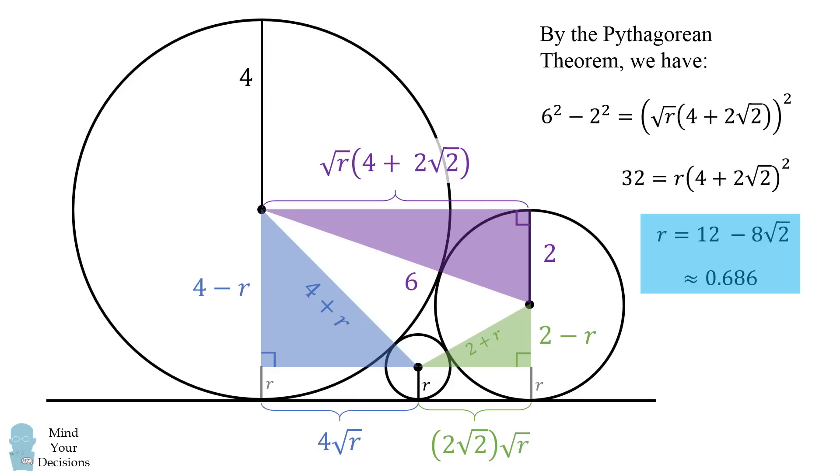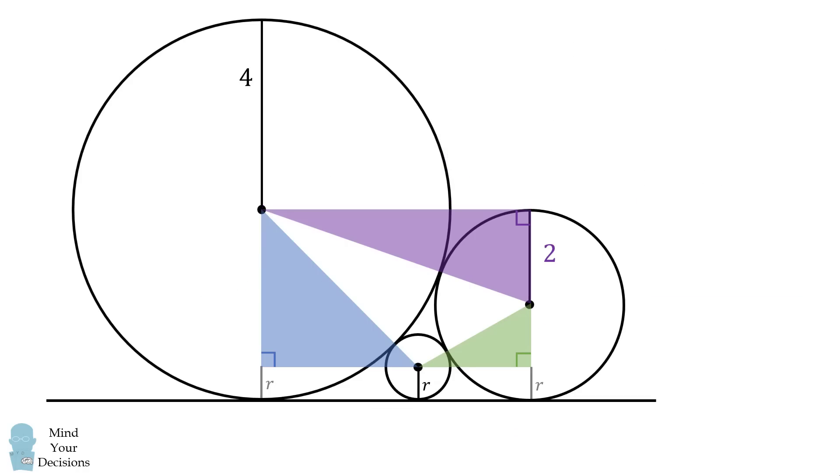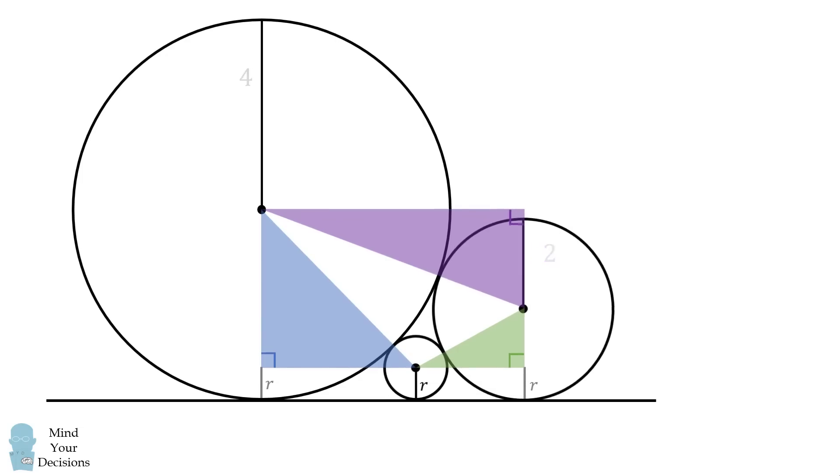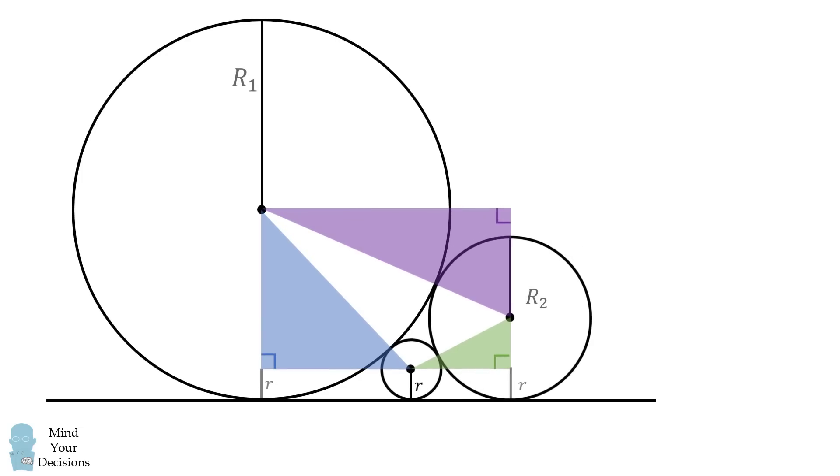But can we generalize this? What would happen if our two larger circles had arbitrary values? Well, we can modify this diagram as follows. Suppose the largest circle has a radius of capital R1, and the next largest circle has a radius of capital R sub 2.